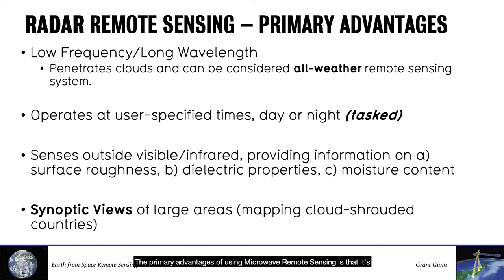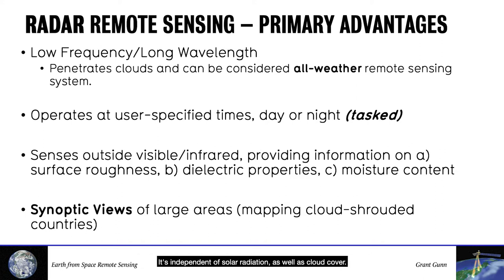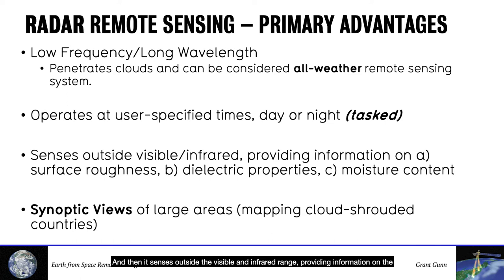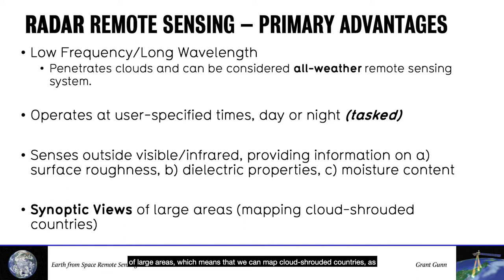The primary advantages of using microwave remote sensing are its low frequency or long wavelength, which penetrates clouds — so we can consider radar to be an all-weather remote sensing system, independent of solar radiation as well as cloud cover. It can be operated at user-specific times, day or night, making it a tasked sensor. It also senses outside the visible and infrared range, providing information on surface roughness, electrical properties, and moisture content of a target. Because of all these advantages, we can create synoptic views of large areas, mapping cloud-shrouded countries over a period of time.